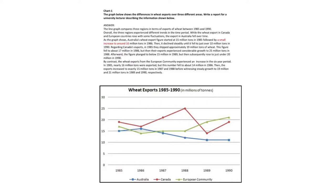Overall, the three regions experienced different trends in the time period. While the wheat exports in Canada and European countries rose with some fluctuations, the export in Australia fell over time.